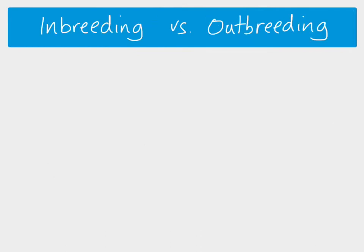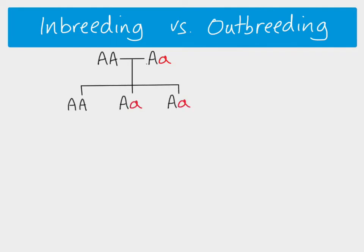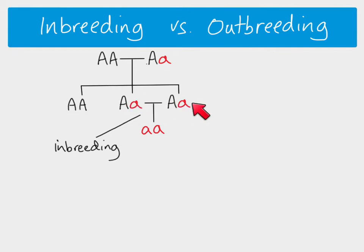So inbreeding is breeding related individuals. Outbreeding is breeding individuals who are not closely related. If these two individuals breed together, they could end up with offspring with these genotypes. If you breed two siblings together, it's 50% likely that you end up with an individual showing the recessive phenotype. Inbreeding can involve siblings, parents and children, grandparents, uncles — closely related individuals. Outbreeding is when you breed with a non-closely related individual.